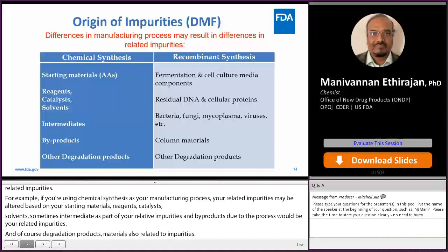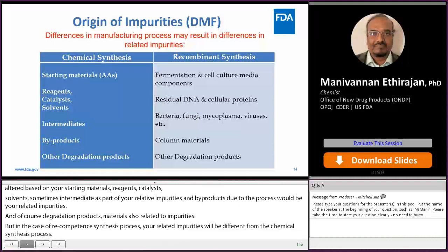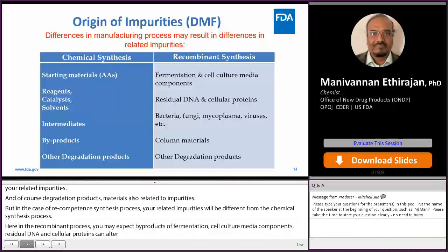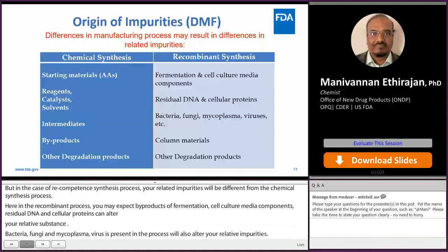In the recombinant process, you may expect byproducts of fermentation, cell culture, and media components. Residual DNA and cellular proteins can alter your related substances. Bacteria, fungi, and mycoplasma viruses present in the process will also alter your related impurities. Column materials will also alter your related impurities, and due to these materials you may get different degradation products.